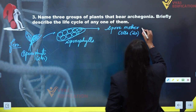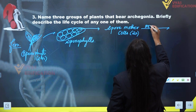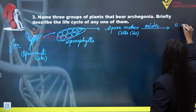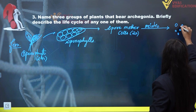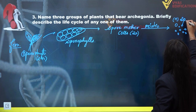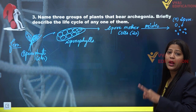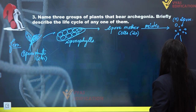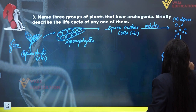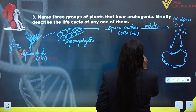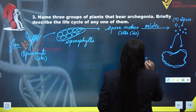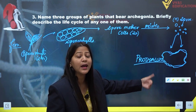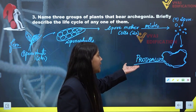These spore mother cells undergo meiotic division, or reductional division, to form haploid spores. Each of these spores undergoes germination and produces a haploid plant body known as the gametophyte, or prothalus in the case of pteridophytes. These spores on germination give rise to a thaloid body — the haploid gametophyte of a pteridophyte — known as the prothalus.